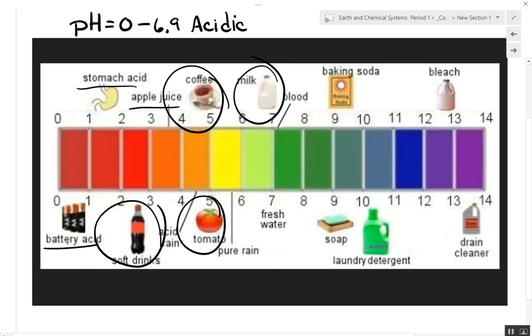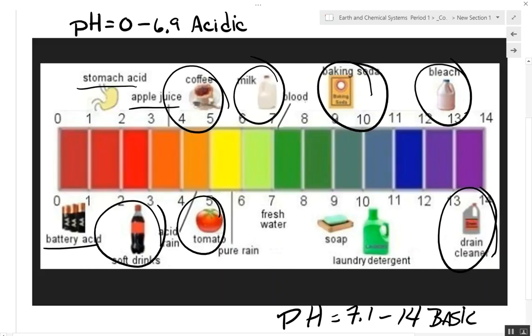For a pH of 7.1 to 14 makes it basic. Drain cleaner, bleach, baking soda, soap. We've already talked a lot about soap and detergents. They're designed to cut the grease and dirt on your clothes so you turn out clean again. So up here, pH of 0 to 6.9 is acidic. Down here, pH of 7.1 to 14 is basic.